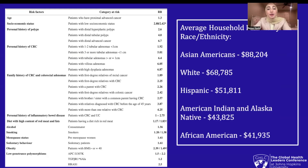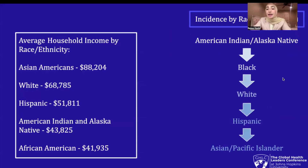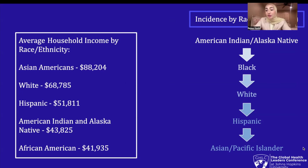When looking at socioeconomic status, there is a trend that can be explained. The average household income by race and ethnicity is the highest for Asian Americans and the lowest for African Americans. Similarly, we can see a trend in incidence by race, where American Indians, Alaska Natives, and Black Americans are at the top of the highest incidence, while they have the lowest household income. Meanwhile, Asian Americans have the highest household income in the nation, while they have the lowest incidence rates of colorectal cancer.